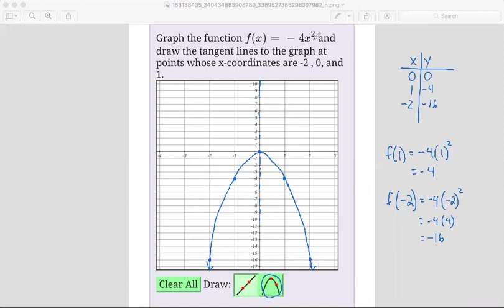And now that we have drawn the function, they want us to draw the tangent lines to the graph. So drawing a tangent line is basically a line that is approximating the slope of the graph at that point. So for example, let me start with zero, because I think it's easiest to see. The graph is increasing at the left of zero, up until it gets to zero. And then when it gets to zero, it's now decreasing.